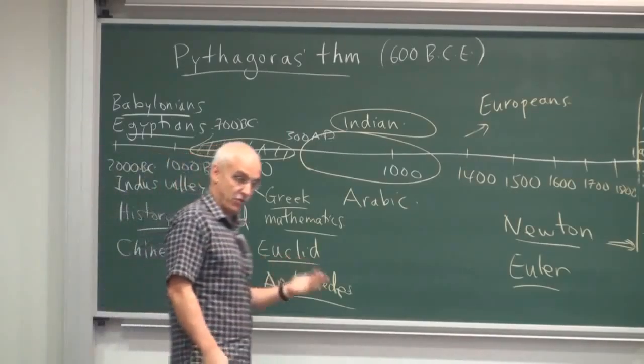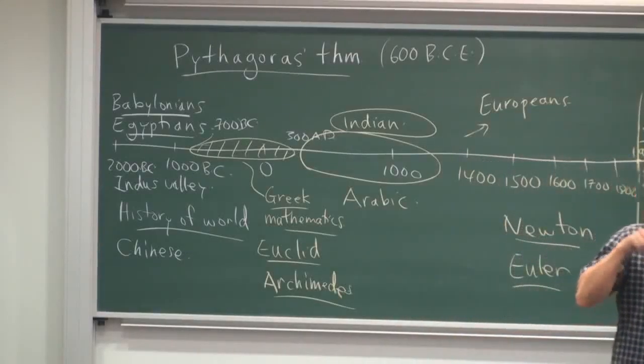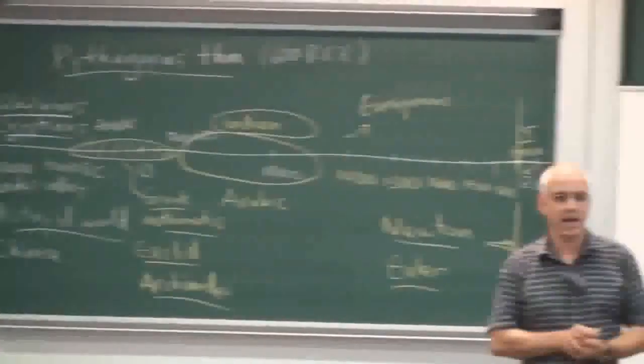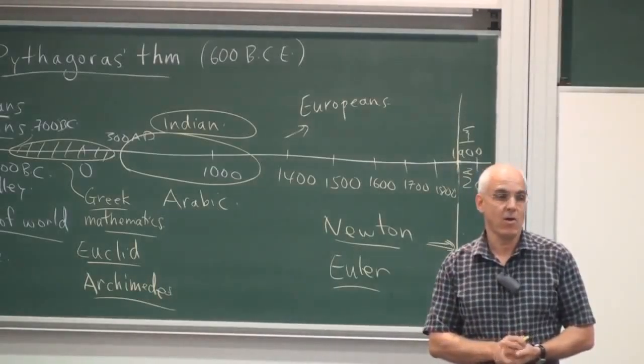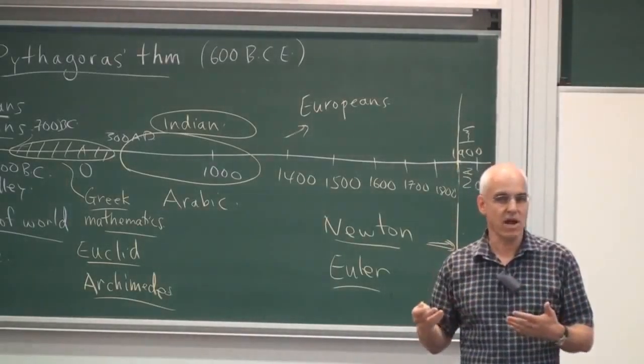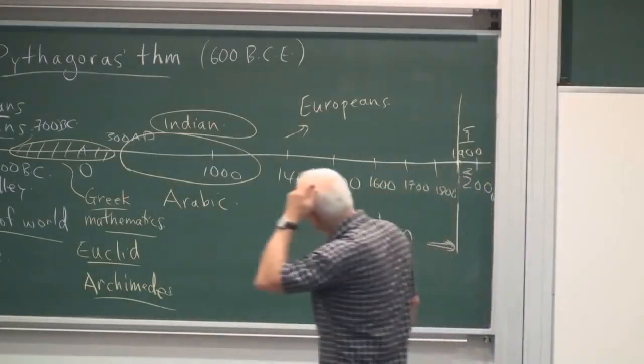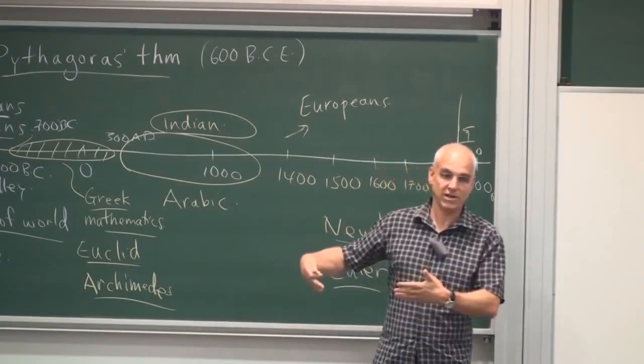Now, I should say, when one talks about Greek mathematics, one is not really talking about just mathematicians from Greece. One should understand that this is a description of a rather broad area. The whole eastern Mediterranean was basically Greek culture, Greek language.